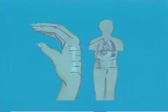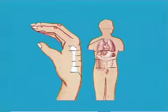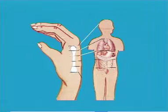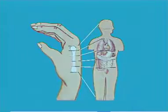The second metacarpal bone of the hand corresponds to a human shape standing up. From the upper to the lower, it represents in order the holographic acupoint areas of the head and neck, heart and lungs, liver, stomach, lower abdomen, and lower limbs.